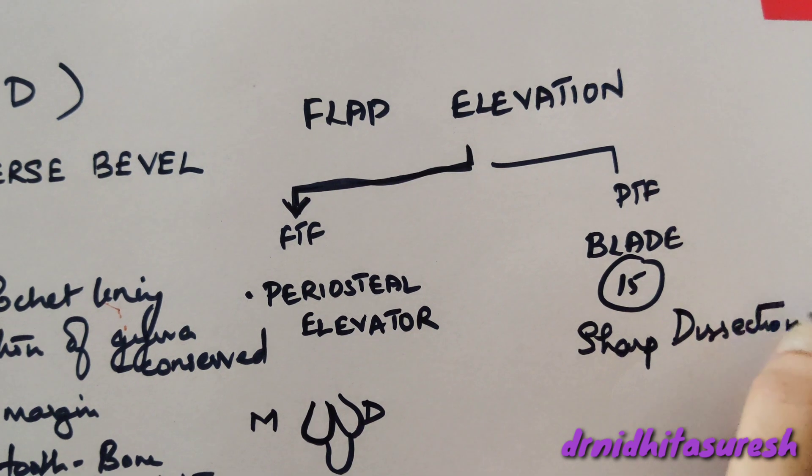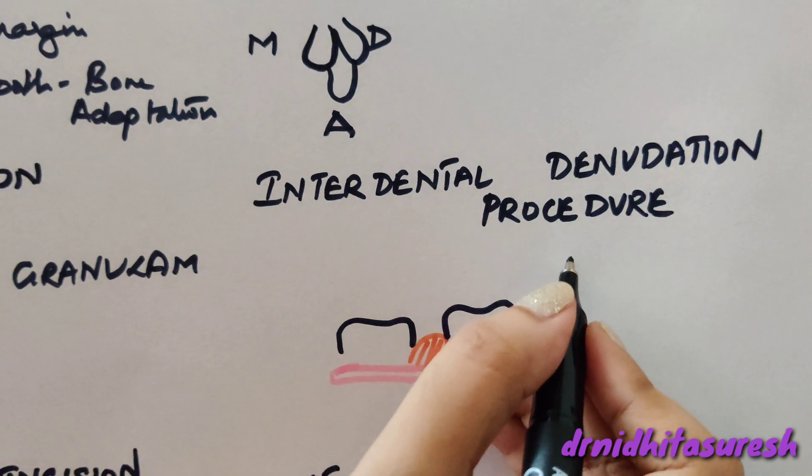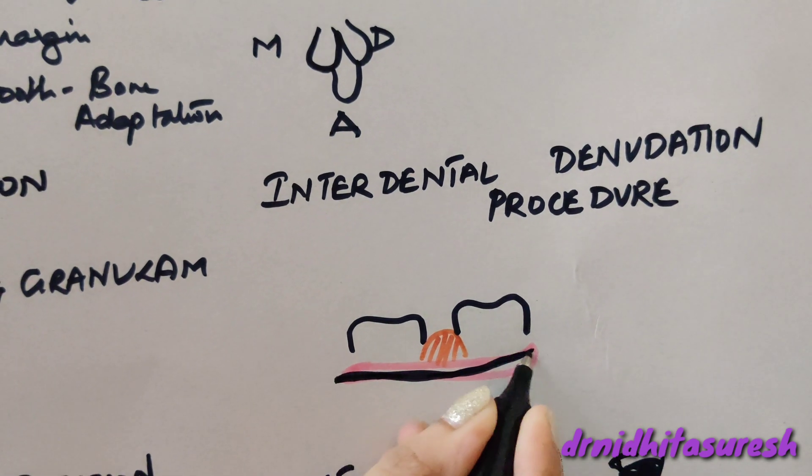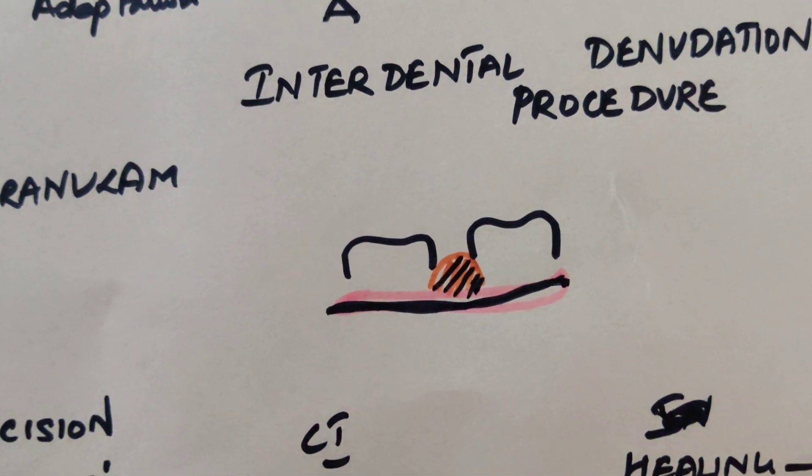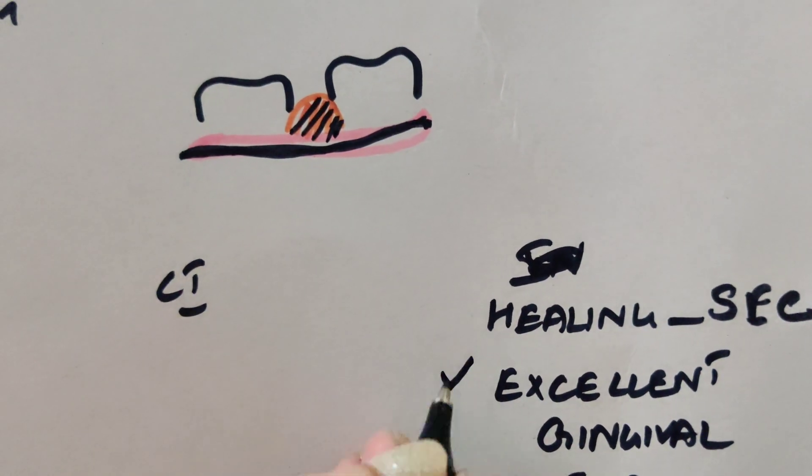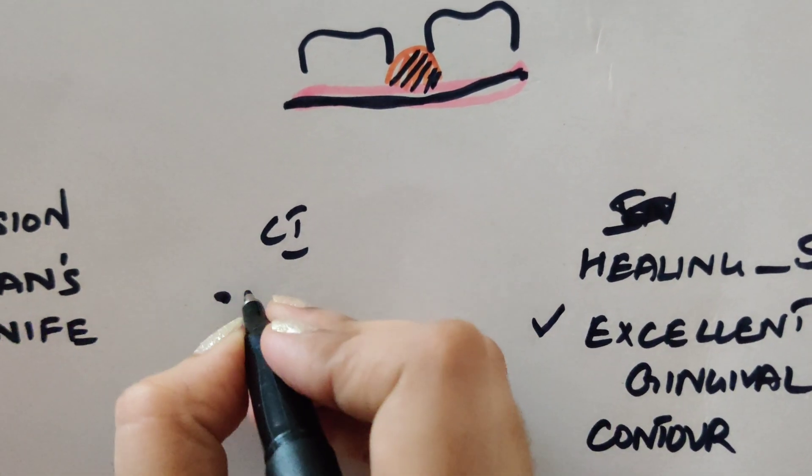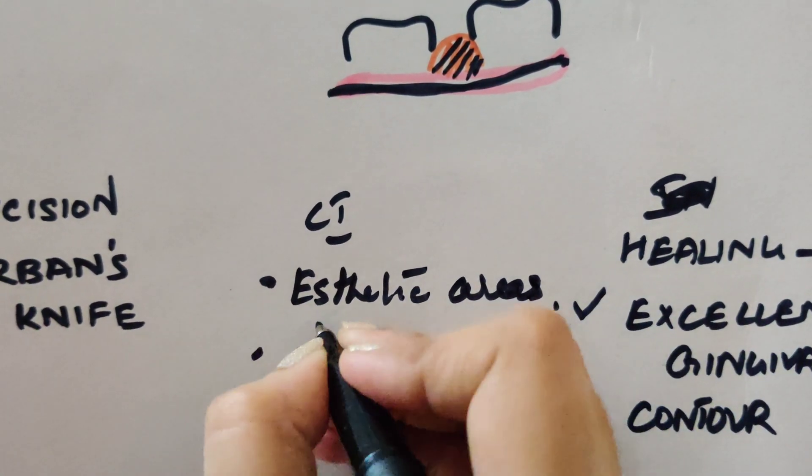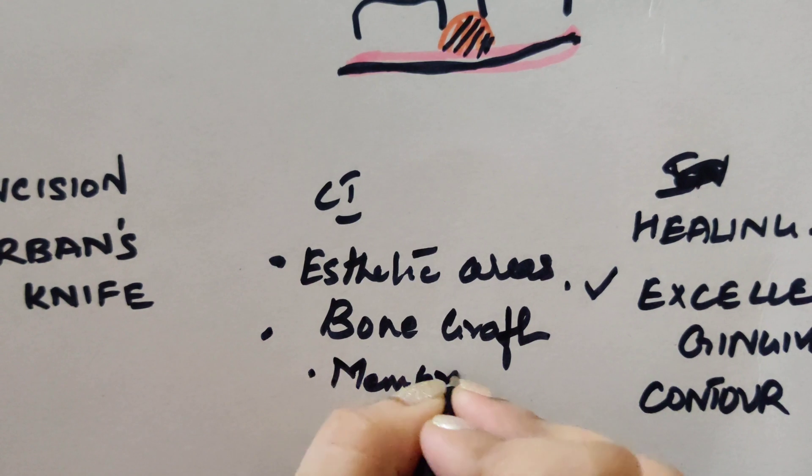Next is the interdental denudation procedure. In this, we give horizontal non-scalloped internal bevel incision and denude the papilla. Once done, healing takes place by secondary intention and you get excellent gingival contour. The contraindications are that you cannot use it in aesthetic areas, or when you're going to use any bone graft or membrane.